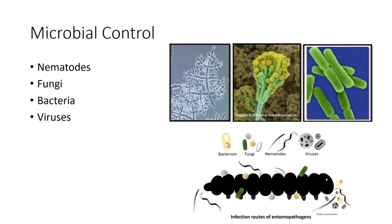Microorganisms include bacteria, viruses, and small eukaryotes such as fungi and nematodes. Some are insect pathogens, usually killing their host, and many of these are host-specific to a particular insect genus or family.